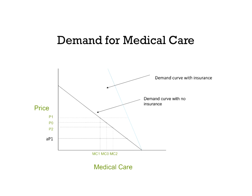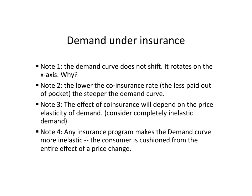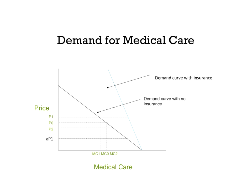The demand curve with insurance does not shift; it rotates on the x-axis. It rotates because we construct it by taking the price, multiplying by the coinsurance rate — what the person actually has to pay — and seeing where, with that lower price, they demand on the old demand curve. At a price of zero, the demand is where the old demand curve hits the x-axis, and that point is the same with or without insurance.